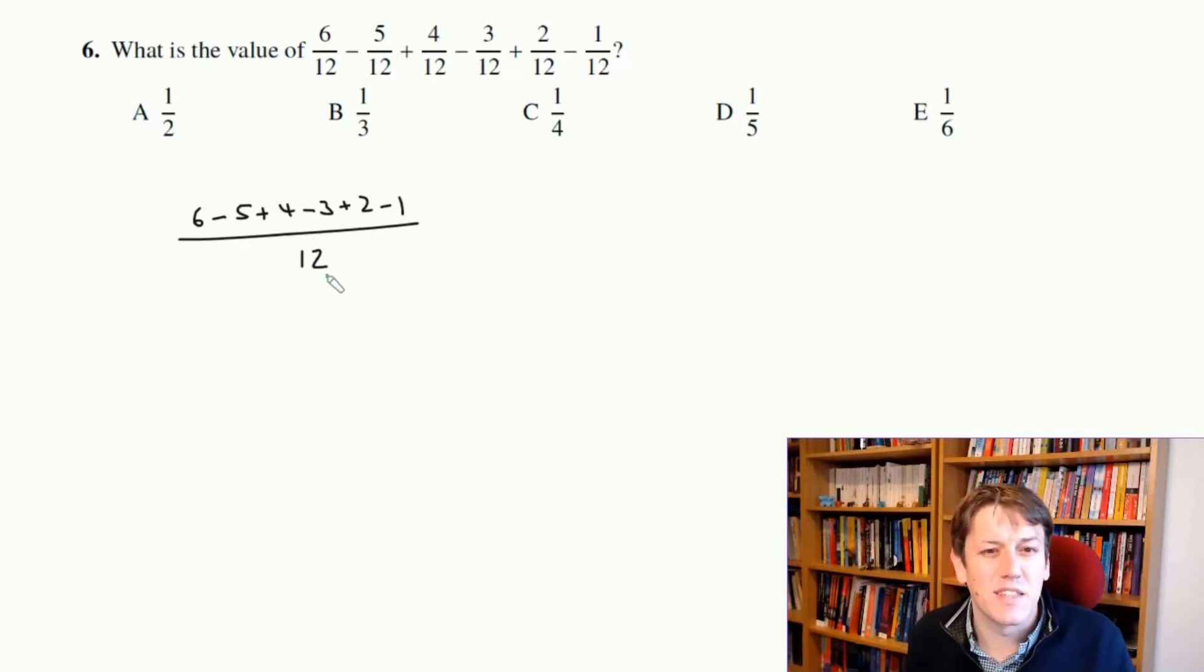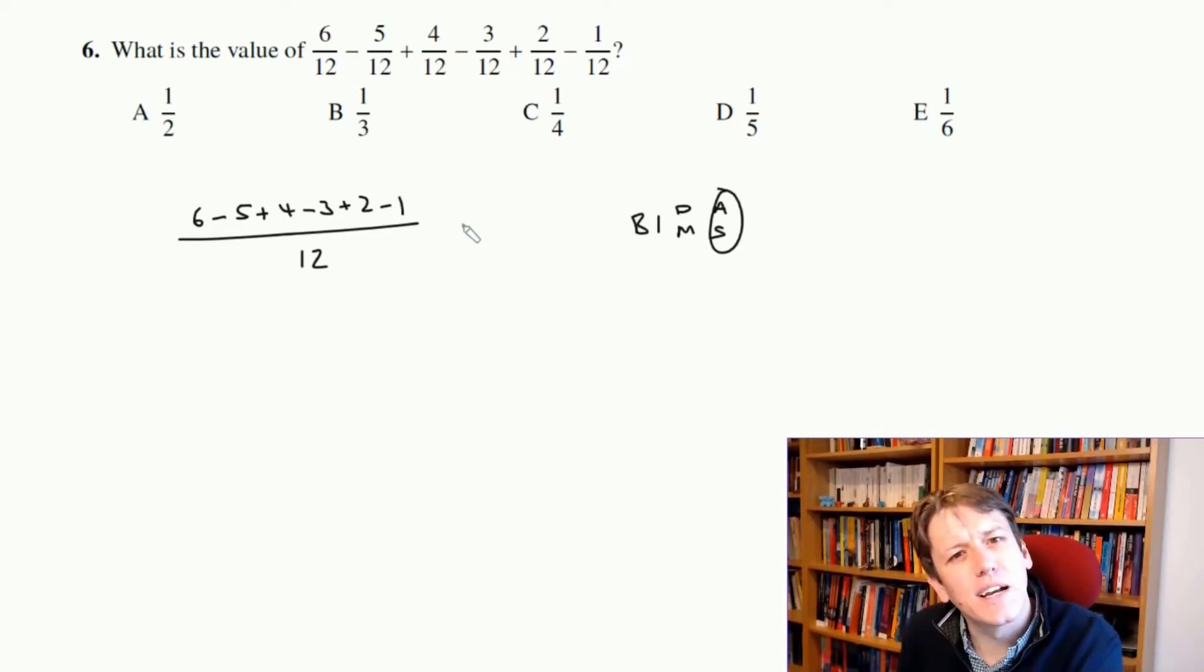Common mistake people make is that they do all the additions before the subtractions in something like this. But addition and subtraction in BIDMAS should really be written together. A lot of teachers write it like this now, because addition and subtraction have the same level of importance. So to work out something like this, I just do 6 minus 5 is 1, plus 4 is 5,